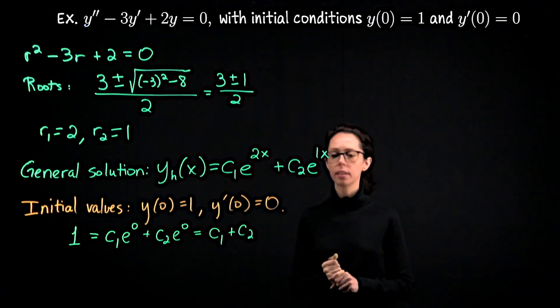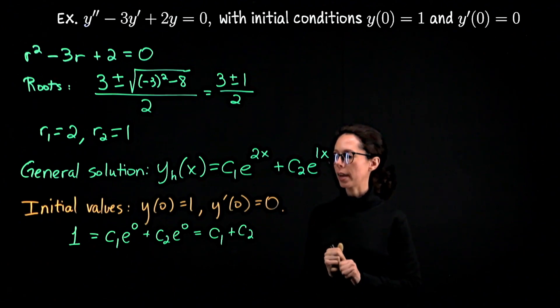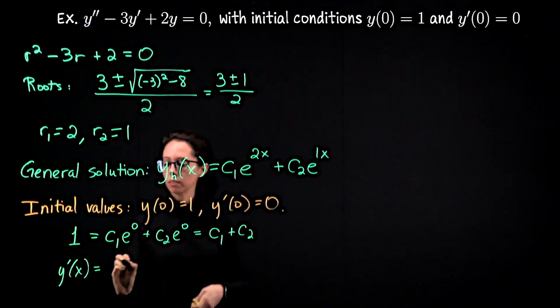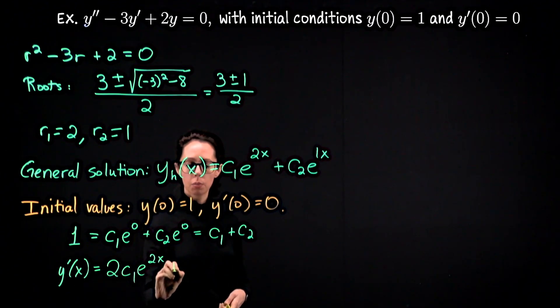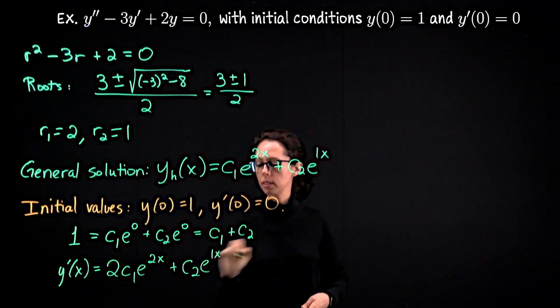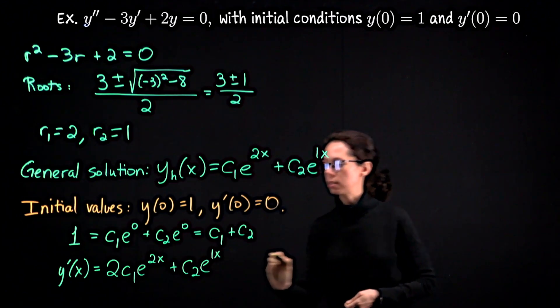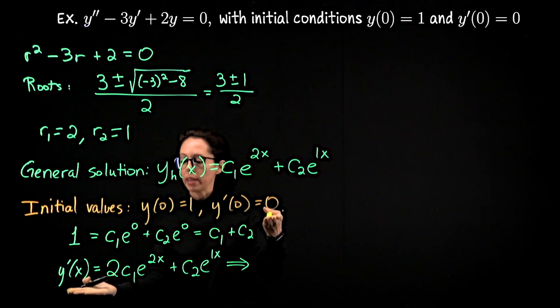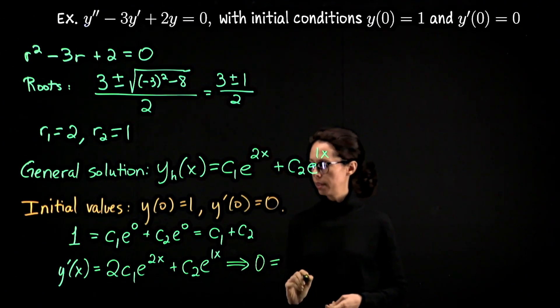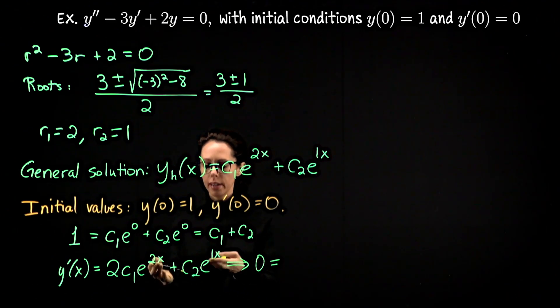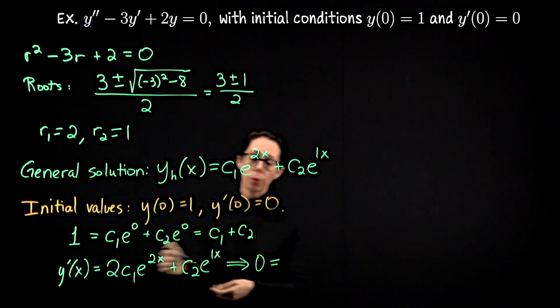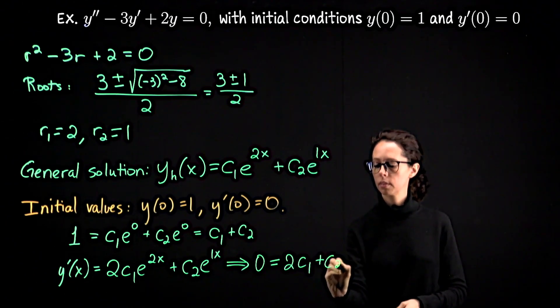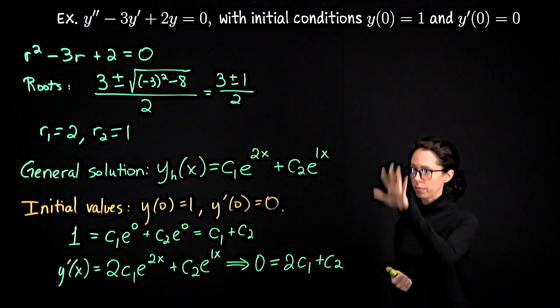That's what we get when we put the first condition into our general solution. For the second condition, we first need to take the derivative. So then also y prime of x is just taking the derivative of this expression with respect to x, the 2 drops down. 2c1 e to the 2x plus the 1 drops down, but that doesn't do anything, so c2 e to the x. So that means, if I put in now x equals 0, this left-hand side should be 0 because when x is 0, y prime is 0. So 0 equals, and then putting x equals 0 into these exponents right here, it's going to turn both of these expressions into 1. So our right-hand side will be 2c1 plus c2.